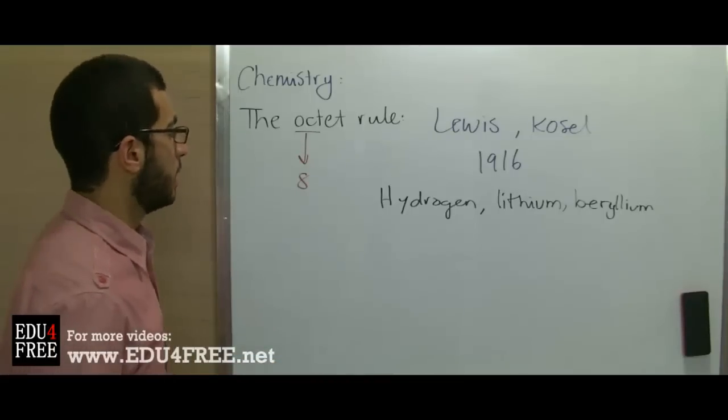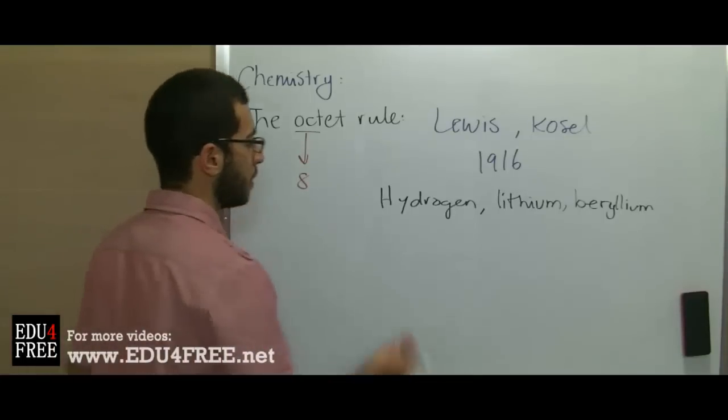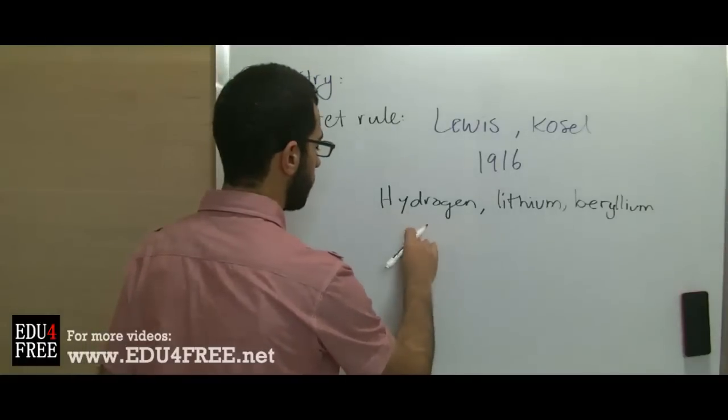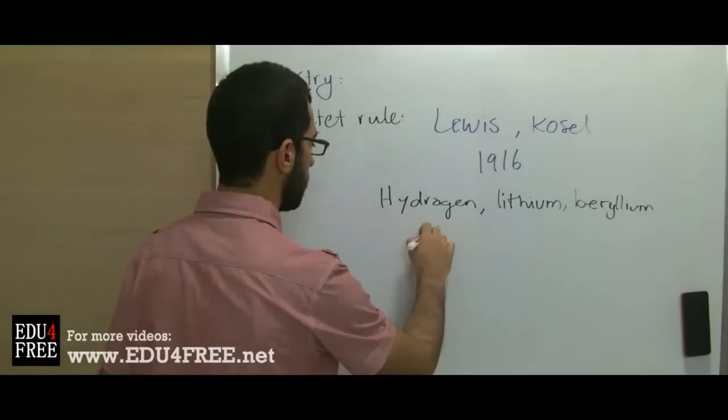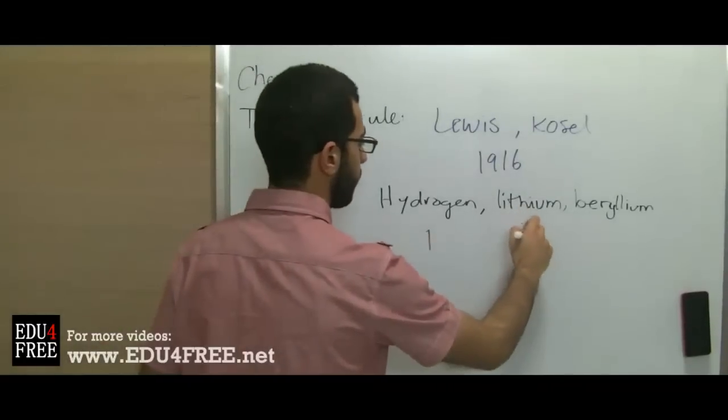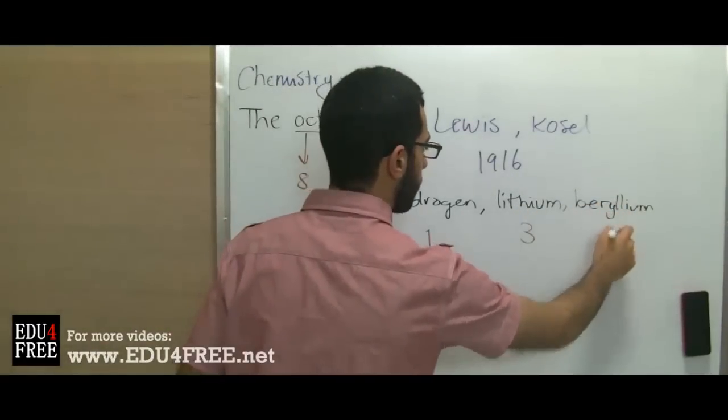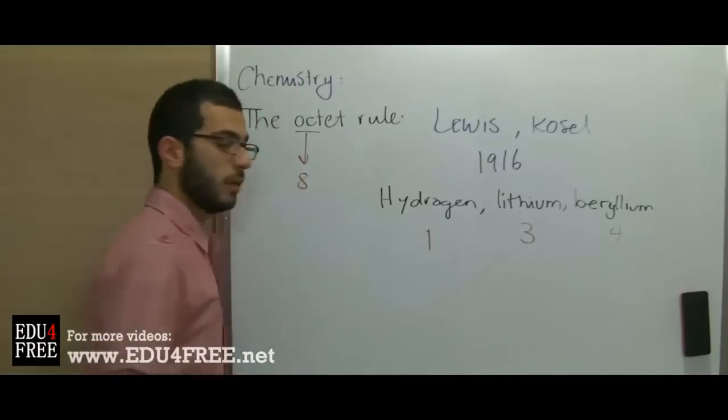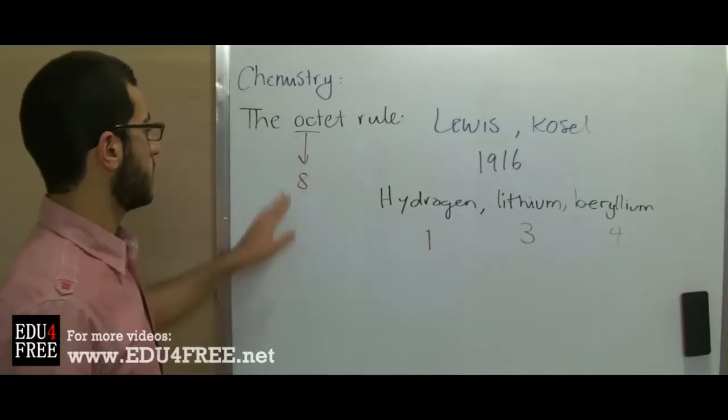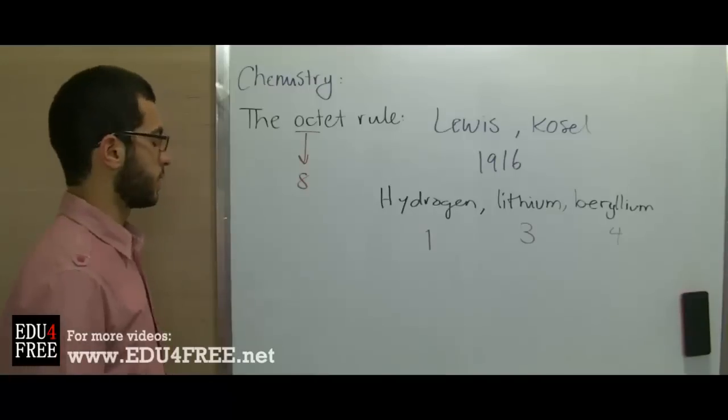The atomic number of hydrogen is 1, lithium is 3, beryllium is 4, so in a covalent bond they will not reach 8 electrons when they gain or lose electrons.